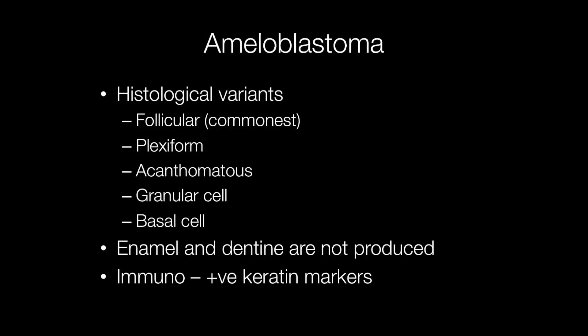There are a number of histological variants of ameloblastoma, the most common being the follicular variant. Other types include plexiform, acanthomatous, granular cell, and basal cell. Another feature of ameloblastomas is that they do not produce enamel and dentine, and immunostains show positivity for keratin markers.